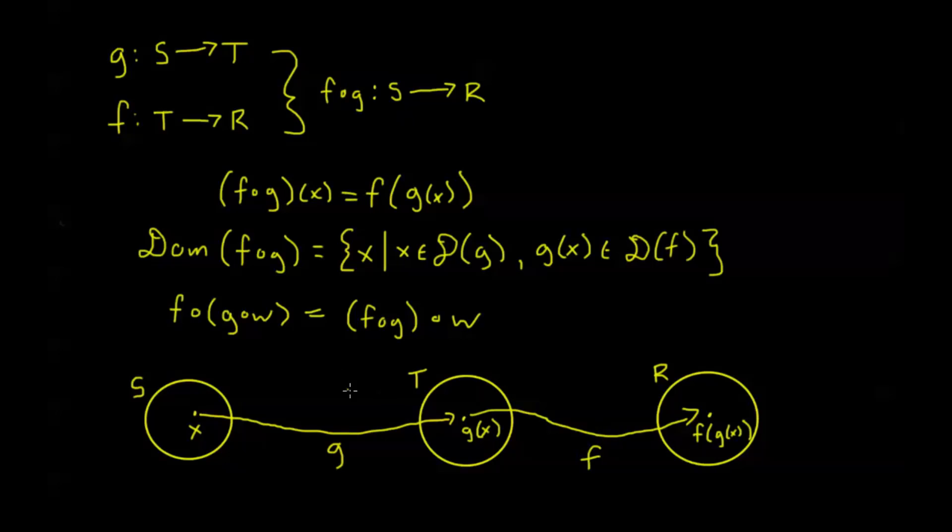Now, what the composition of functions does is it kind of cuts out all these little steps, and it creates a brand new function that goes straight from S directly to R and maps x to the image f of g of x. So this mapping here is f composed with g. We're just kind of bypassing this middle set, and we're creating a new function that doesn't rely on us doing all these steps, but that we can just go directly from our domain of g to our codomain of f. And that's, in a nutshell, that's what composition is.